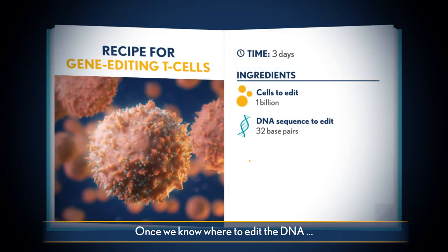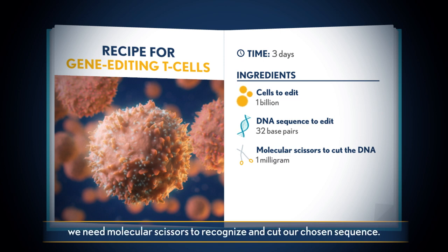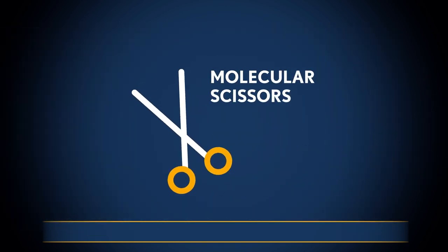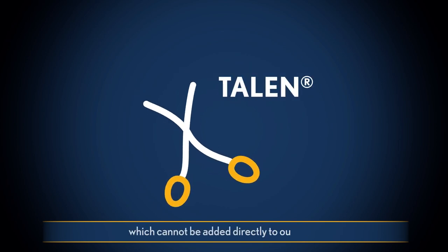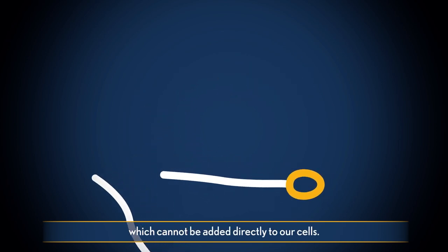Once we know where to edit the DNA, we need molecular scissors to recognize and cut our chosen sequence. These scissors are known as talon, which cannot be added directly to our cells.